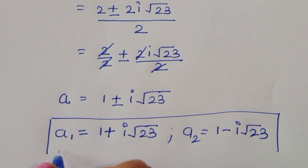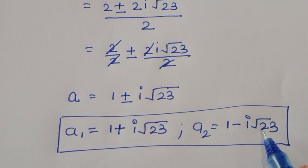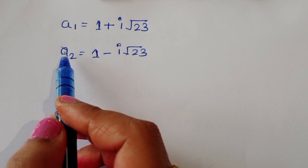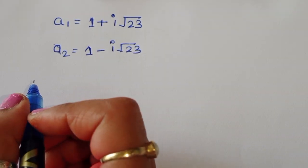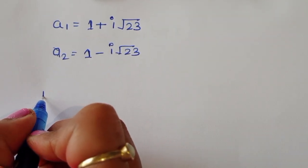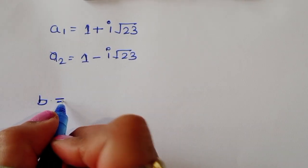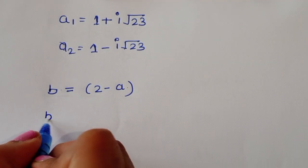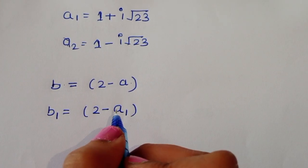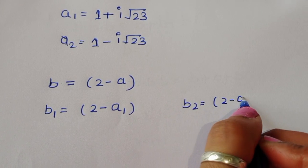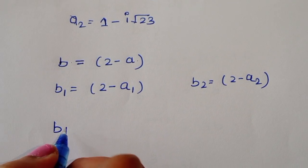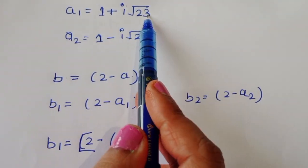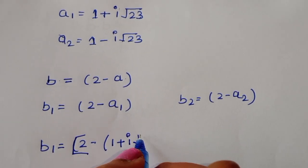Now we also need to find b1 and b2. Using equation 3, b equals 2 minus a. So b1 equals 2 minus a1, and b2 equals 2 minus a2. For b1: 2 minus (1 plus i root 23) equals 1 minus i root 23.